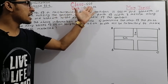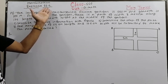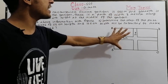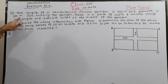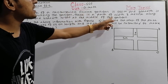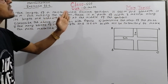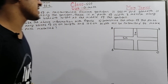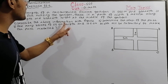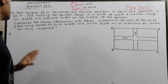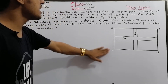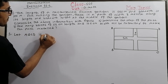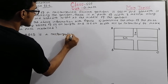Assalamualaikum, welcome dear students. Now we discuss general math mensuration Exercise 16.2. Question 14: The length of a rectangular floor garden is 150 meters and breadth is 100 meters. There is a path of width 3 meters along its length and breadth at the middle of the garden. Describe the above information with a figure. ABCD is a rectangular garden.